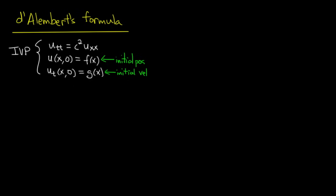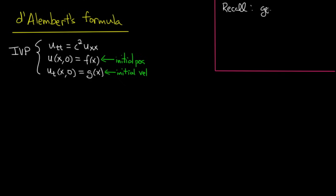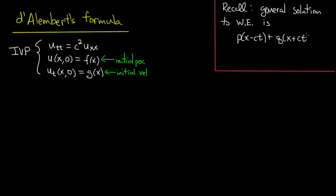The tool we're going to use to derive d'Alembert's formula is the general solution to the wave equation derived in the last video. Recall that the general solution to the wave equation is p of x minus ct plus q of x plus ct, where p and q are arbitrary, sufficiently nice functions.